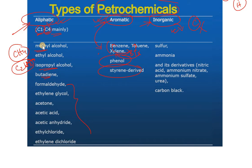Then there is the inorganic type. Inorganic examples include sulfur, ammonia (NH3), and their derivatives such as nitric acid, ammonium nitrate, and carbon black.